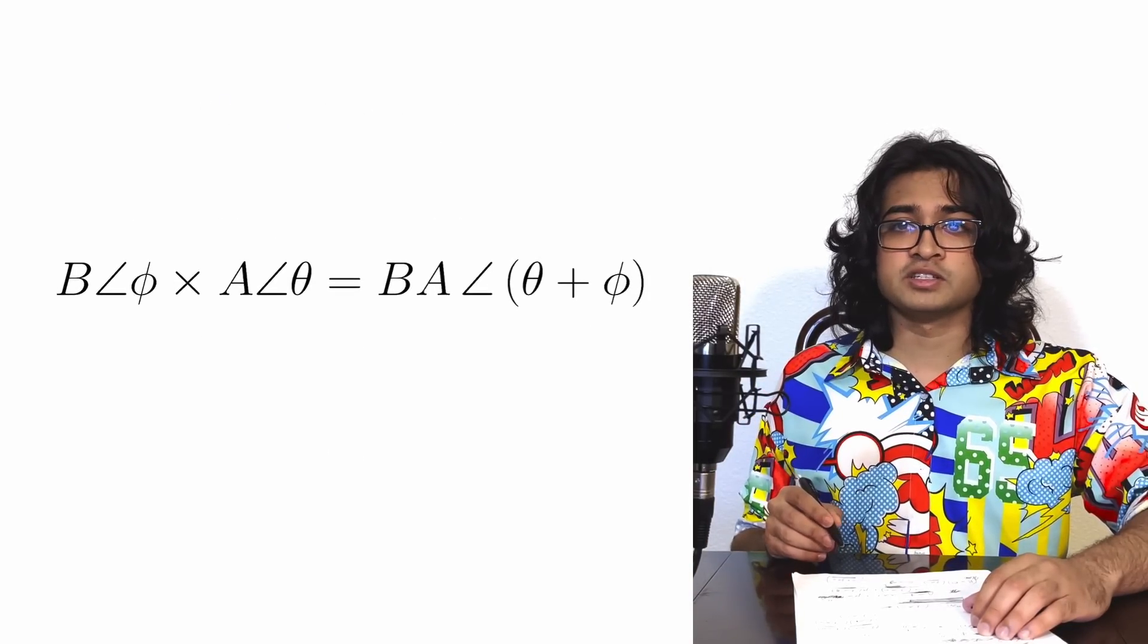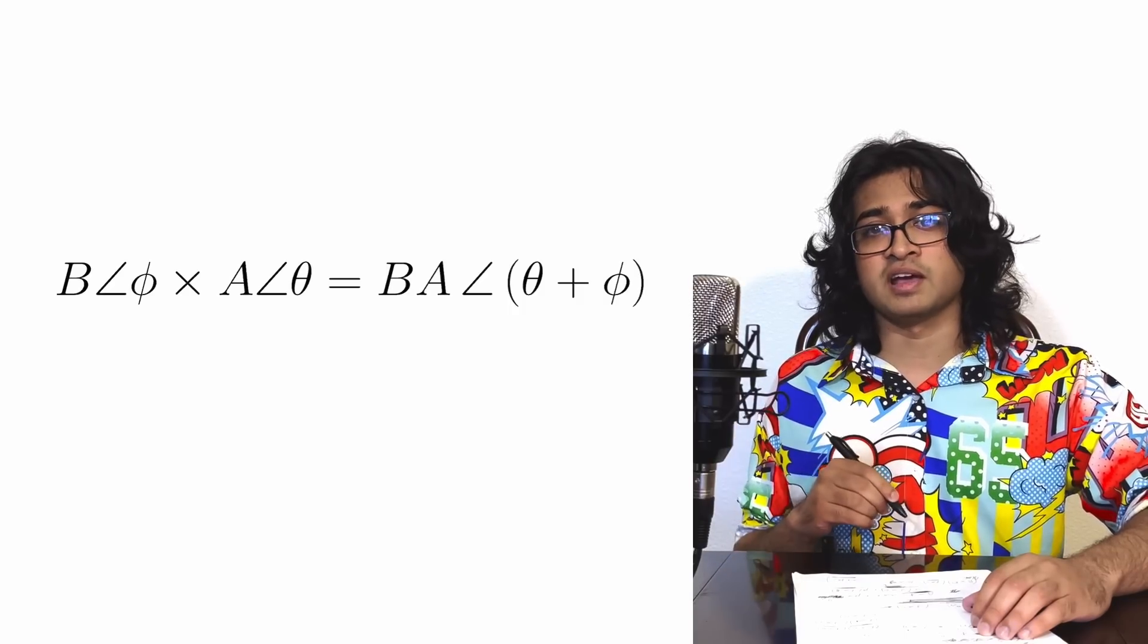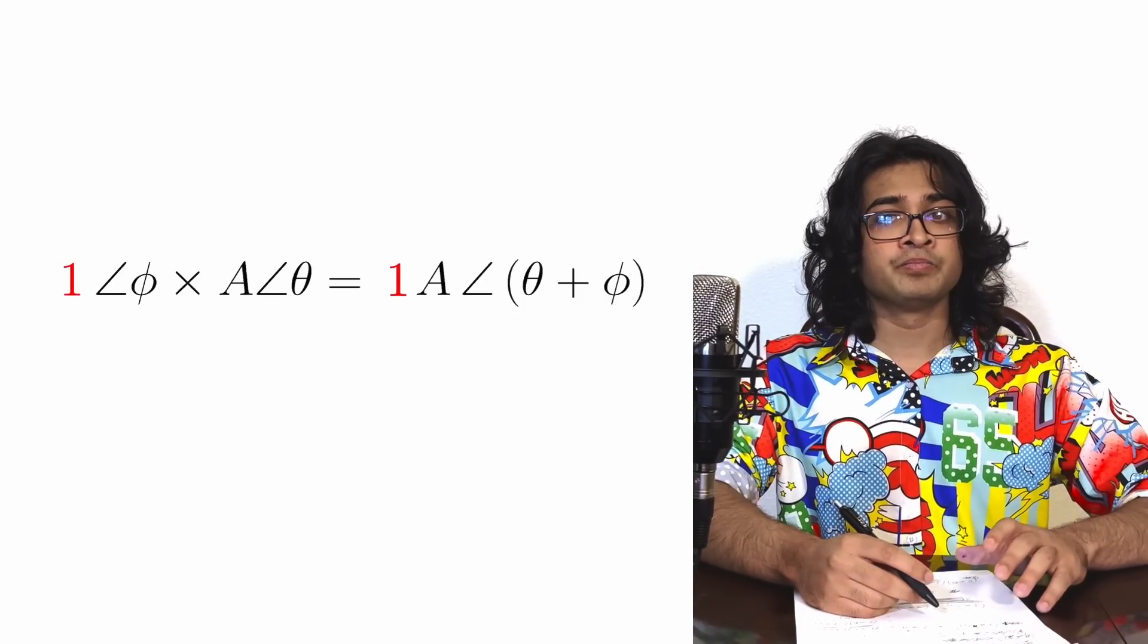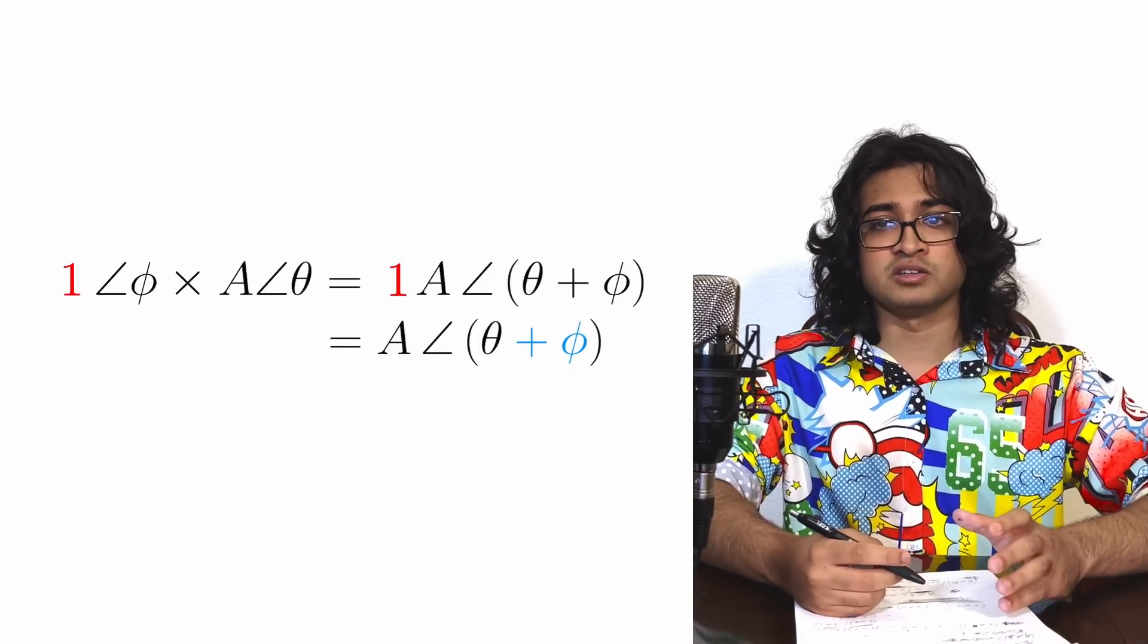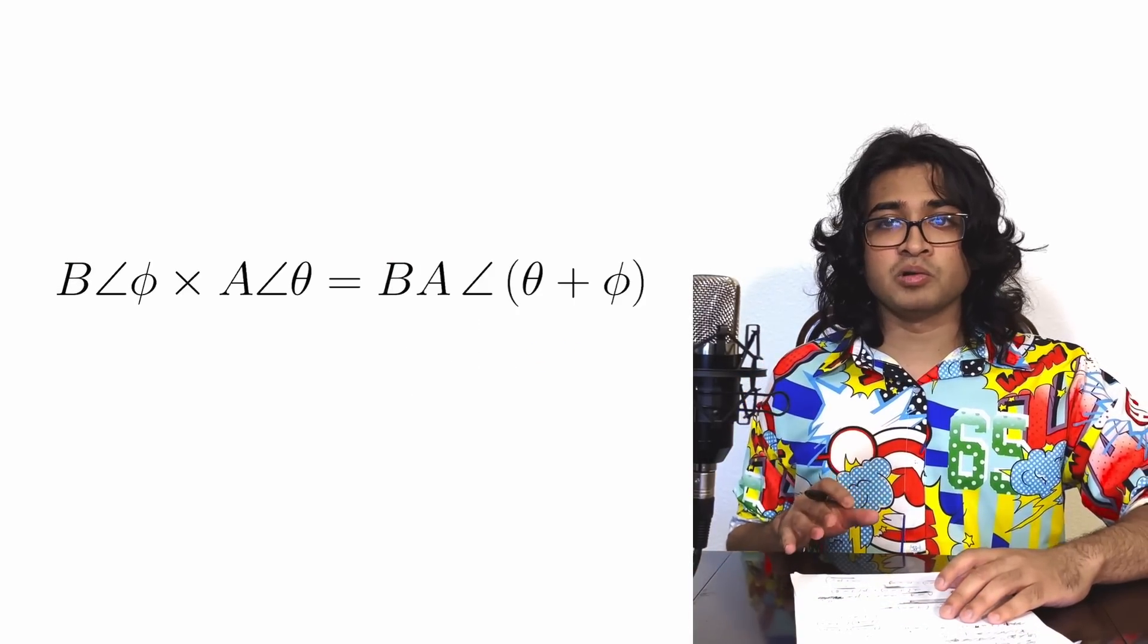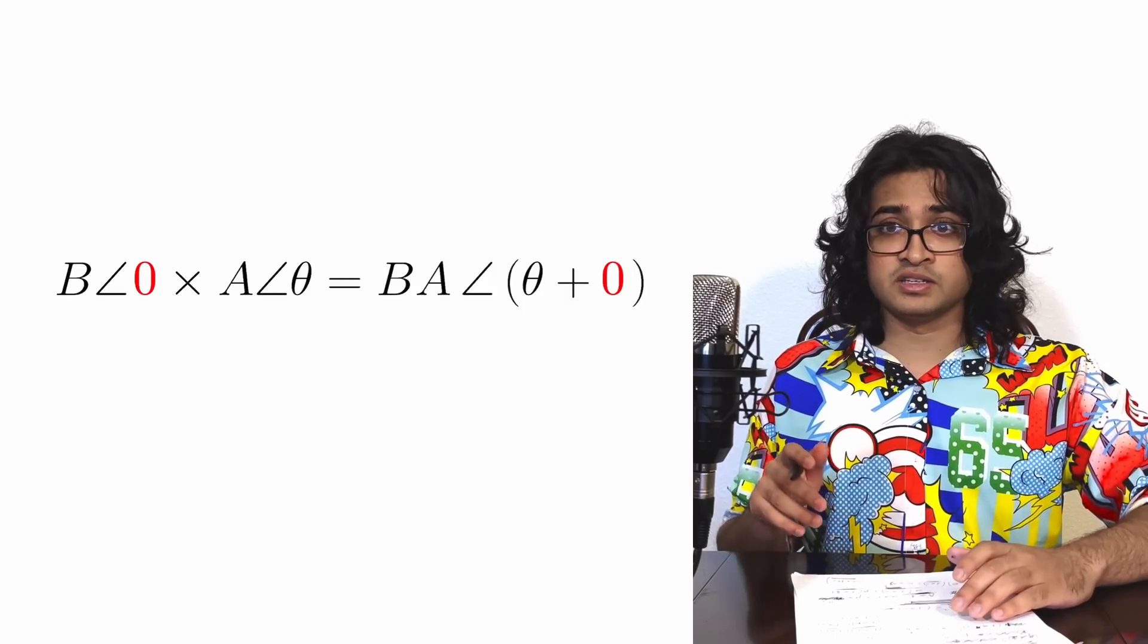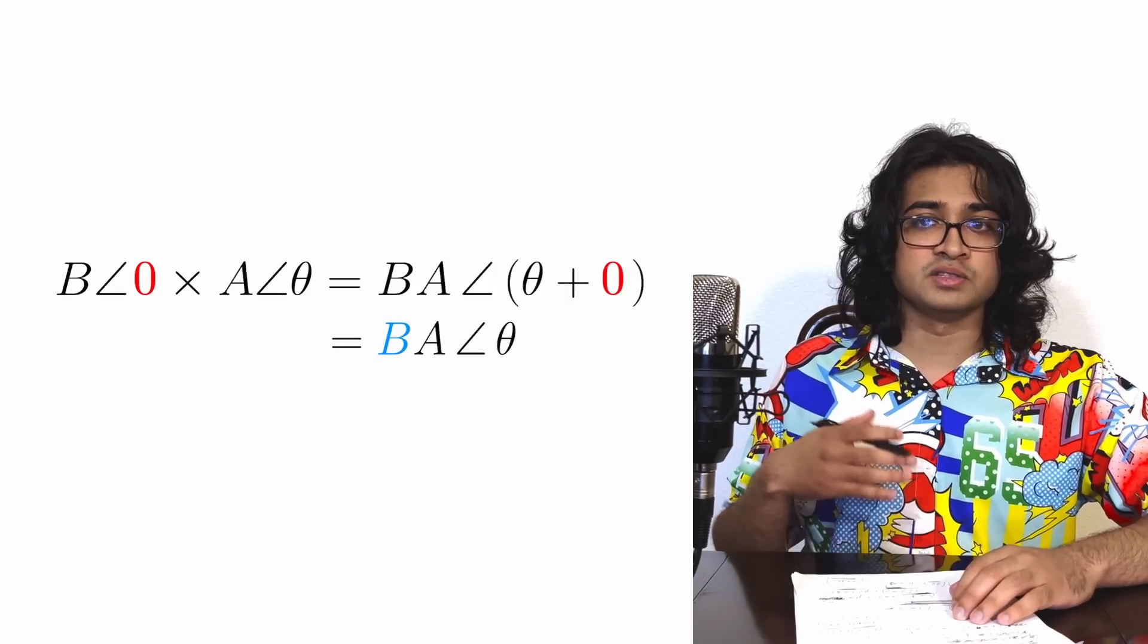It's easy to come up with polar objects that do just rotation or just scaling. If we have a polar object with magnitude 1 and phase phi, then it just does a rotation by phi radians and it leaves the magnitude unchanged. If we have a polar object with magnitude B and phase 0, then all it does is scale by a factor of B and it leaves the phase unchanged.